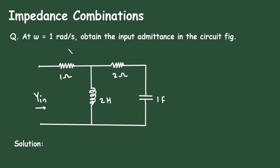In this video, we will see an example on impedance combinations. At omega equals 1 radian per second, obtain the input admittance in the circuit of figure.